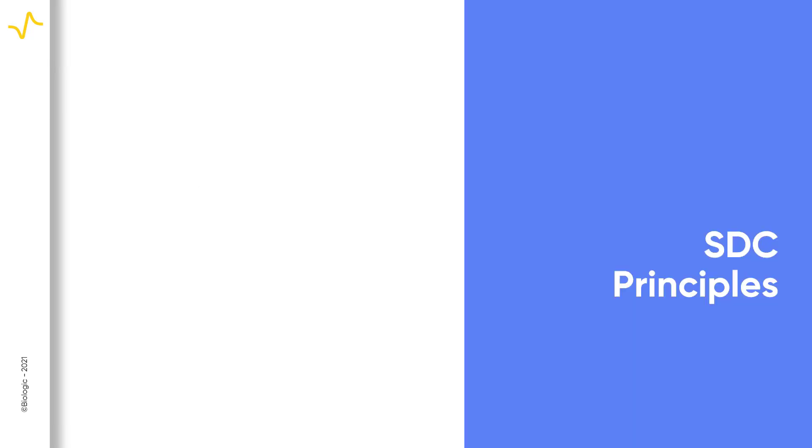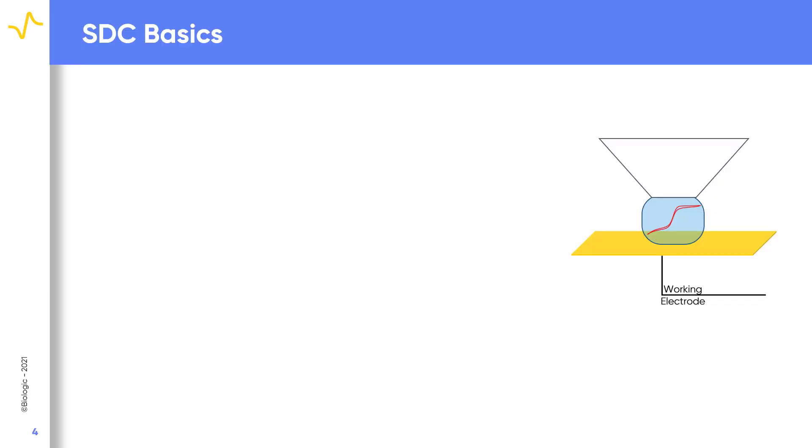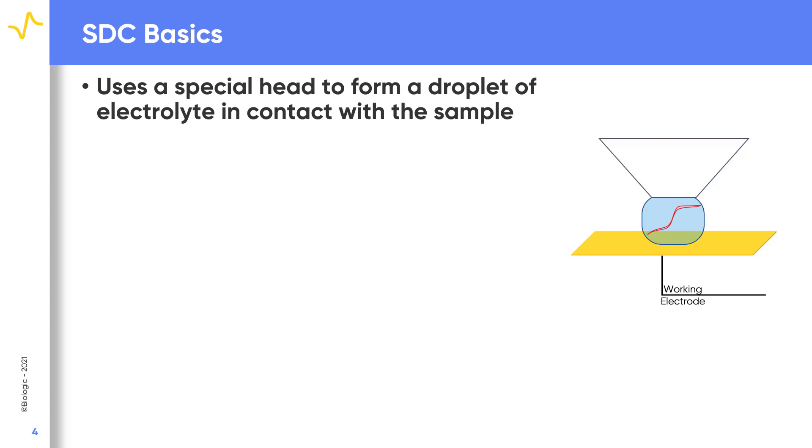Let's first look at the background principles of the SDC technique. The SDC technique is illustrated. In SDC, a droplet is used as the local probe to measure the sample.